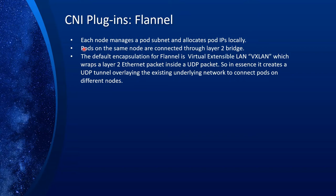When pods are on the same node, they are connected through a bridge — pods on the same node are connected through a layer two bridge. When a pod from one node wants to communicate with a pod on another node, the default encapsulation for Flannel is Virtual Extensible LAN or VXLAN. Essentially, it wraps a layer two Ethernet packet inside a UDP packet, creating a UDP tunnel overlaying the existing underlying network to connect pods on different nodes. We will see that pictorially next.